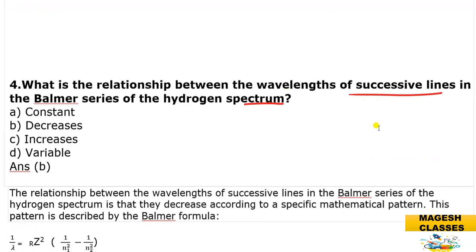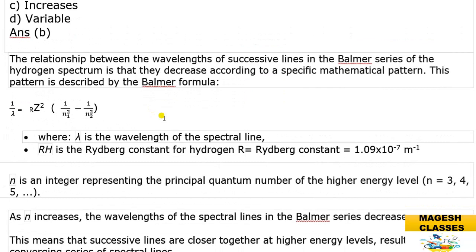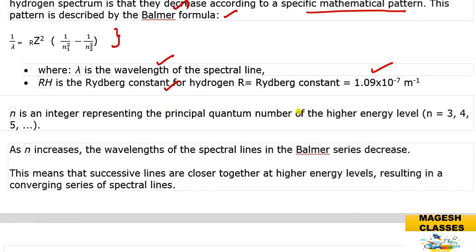The answer is: wavelength decreases. The relationship between the wavelength of successive lines in the Balmer series or any series of hydrogen decreases according to a specific mathematical pattern described by the Rydberg formula: 1/λ = R(1/n₁² − 1/n₂²). As n increases, the wavelength decreases. This means successive lines are closer together at higher energy levels.